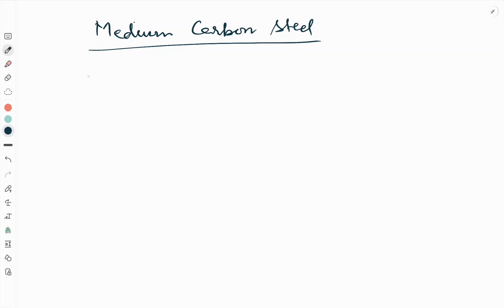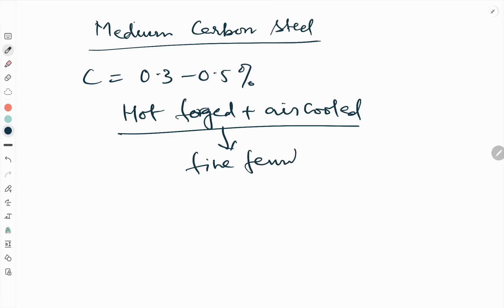Basically, the fourth components such as agricultural components have carbon content around 0.3 to 0.5 percent. After hot forging, the components are air-cooled, so the process is hot-forged plus air-cooled. The final microstructure is fine ferrite and pearlite mixture.